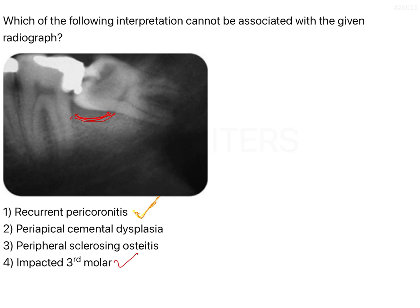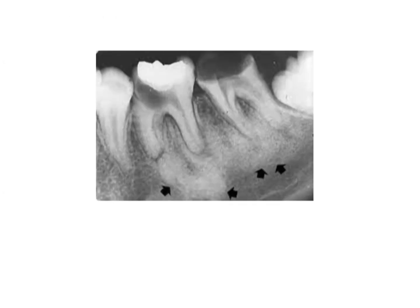Now, regarding periapical cemental dysplasia and peripheral sclerosing osteitis — there is one easy way to remember: the most frequent location of periapical cemental dysplasia is the mandibular anterior teeth, whereas peripheral sclerosing osteitis (condensing osteitis) is found in the posterior mandibular teeth. Condensing osteitis usually occurs as a sequelae to caries — the caries lesion involves the pulp and then spreads to the periapical tissues.